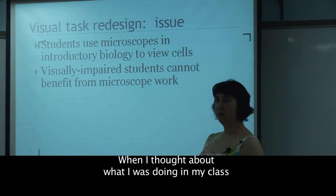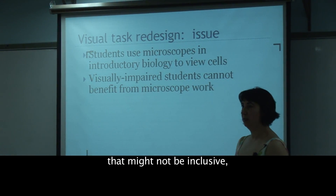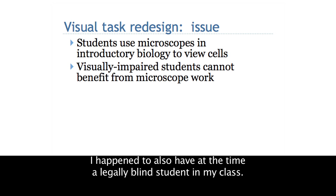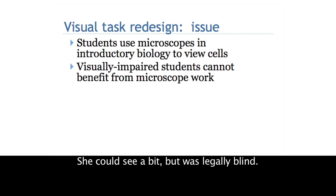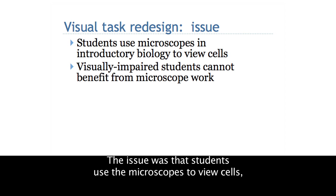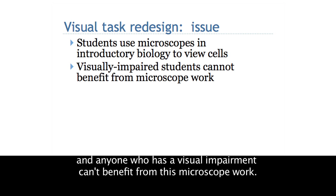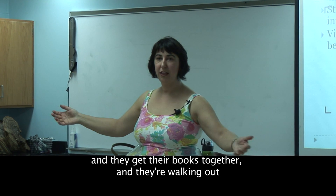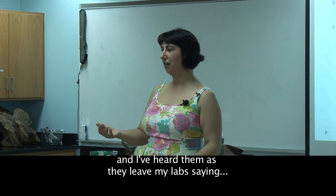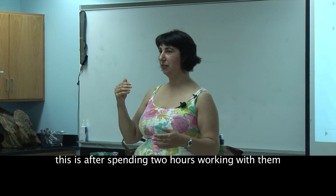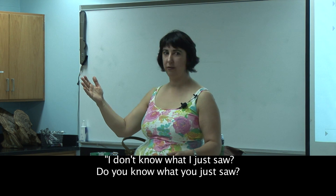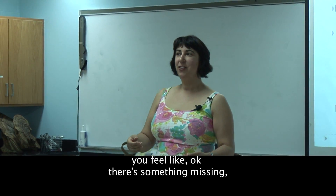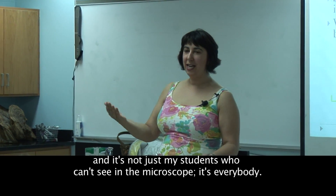When I thought about what I was doing in my class that might not be inclusive, I happened to have at the time a legally blind student - she could see a bit but was legally blind - so she couldn't see in the microscope. The issue was that students use microscopes to view cells and anyone with a visual impairment can't benefit from this. But in addition, when we're done with the lab and everyone's leaving, I've heard them say things like 'I don't know what I just saw' - and this is after I spent two hours working with them.